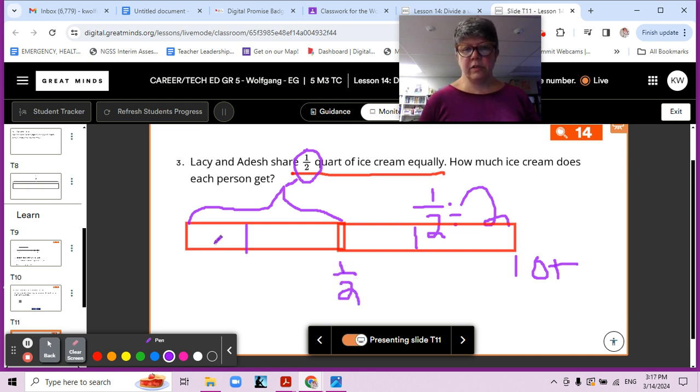All right. Now, how many pieces do you see? One, two, three, four pieces. And, of course, each of them is only getting one of the pieces. So, that would be one fourth.